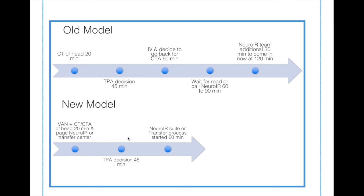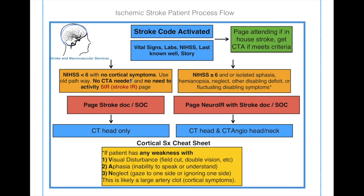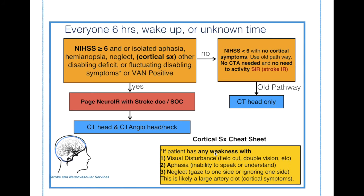You still give TPA at 30 to 45 minutes — that shouldn't be slowed down at all. The only thing that might take time is perfusion imaging, but we're only advocating for CT angiogram if it takes less than 10 minutes. Then give TPA, place the IV later, and your goal is to be in the neuro IR suite or in the transfer process within 60 minutes. Our model: anyone with an NIH stroke scale of 6 or greater, or VAN positive — visual disturbances, aphasia, or neglect — automatically pages neuro IR and stroke, and gets a CT angiogram of head and neck simultaneously rather than sequentially.